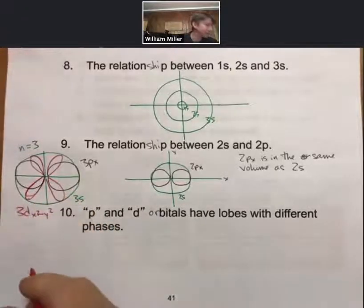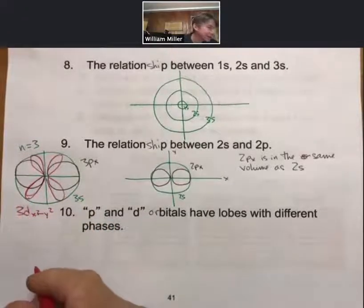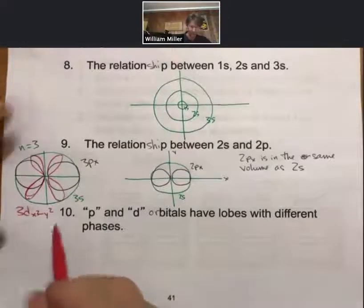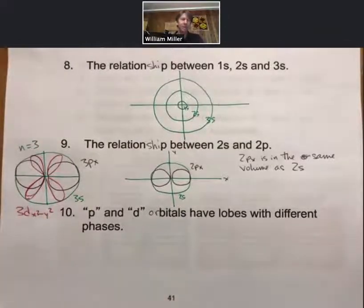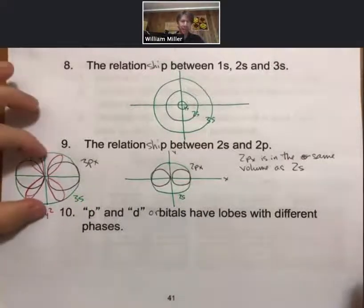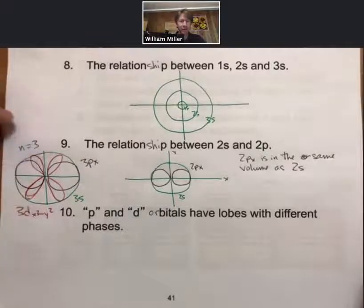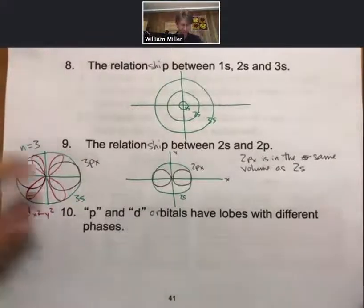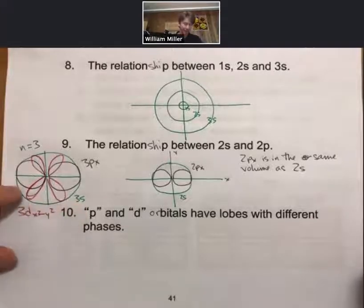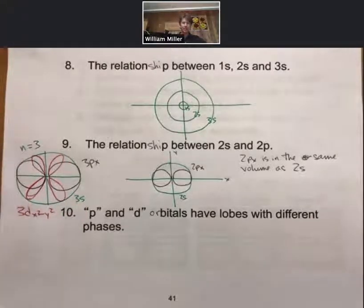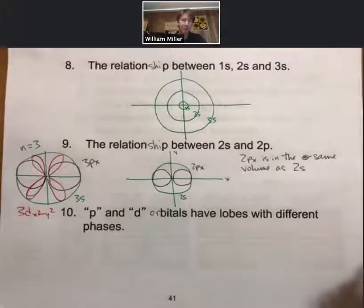And so the 3ds are more complicated ways of fitting electrons into the same sphere for n equals 3, which is defined by the 3s sublevel. And remember, n equals 3 is approximately 9 times larger than n equals 1. So there's more space, so there's more ways of putting the electrons in.